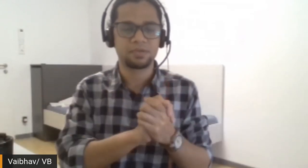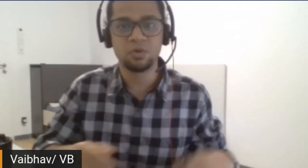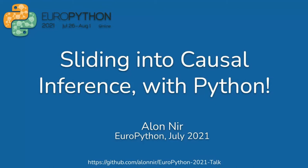We're kick-starting the data science track again and we're going to be joined by Alan, who's going to be talking about causal inference. Just a quick announcement: do look out for the sprints happening tomorrow and the day after — we have some really nice projects and you can also propose your own. Alan is a senior data scientist at Spotify and he's going to be talking today about sliding into causal inference with Python.